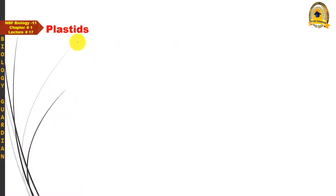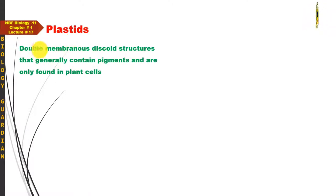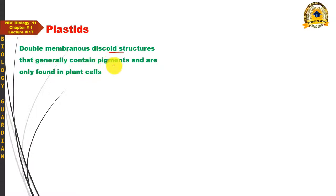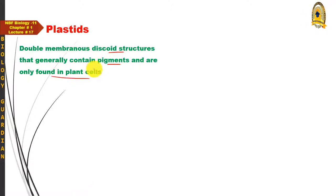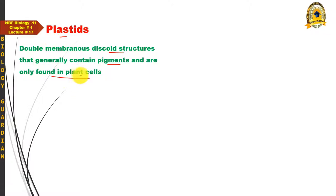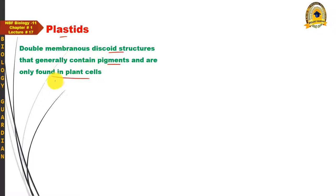Now we discuss plastids — another important organelle as far as plant cells are concerned. Plastids are double-membranous, discoid structures that generally contain pigments and are only found in plant cells. This is a characteristic feature of plant cells, just as centrioles are associated with animal cells. Plastids are generally pigment-containing bodies.